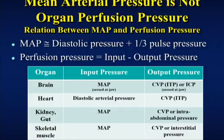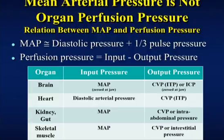So what is the perfusion pressure? It is not mean arterial pressure — it is input pressure minus output pressure. We have several input pressures: mean arterial pressure and diastolic arterial pressure. For the brain, it's mean arterial pressure minus intracranial pressure or CVP, whichever is higher. For the heart, since it can only perfuse when relaxed, it's diastolic pressure minus CVP. For the kidney and gut, it's mean arterial pressure minus intra-abdominal pressure or CVP. For skeletal muscle, it's mean arterial pressure minus interstitial pressure. If you have a compartment syndrome, you'll have ischemic muscle with a normal arterial pressure because interstitial pressure in the compartment rises.